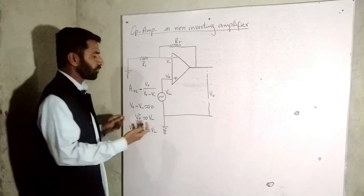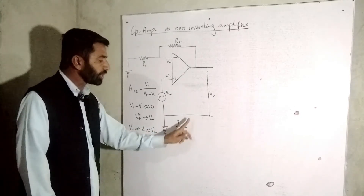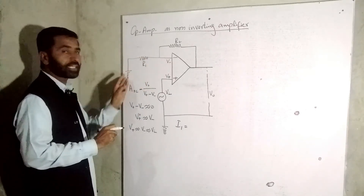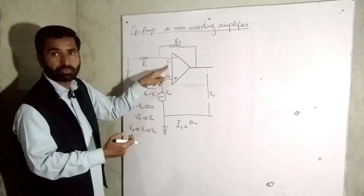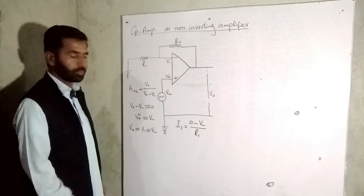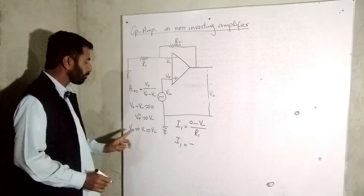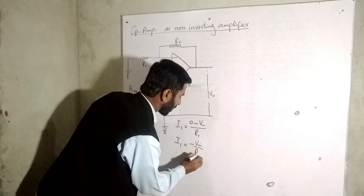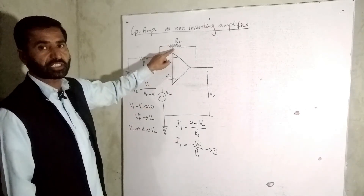To find I1, we use I = V/R. The left side of R1 is at ground potential (zero), and the right side is at V minus, which equals Vin. So I1 = (0 - Vin) / R1, which gives us I1 = -Vin / R1. This is equation number 1. Now we calculate the current flowing across resistance R2.